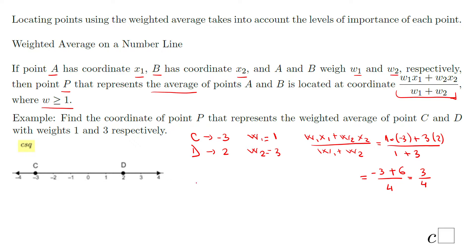That's the coordinate of point P. Point P is at 3 over 4, somewhere right here. Which makes sense, because if you take a look, the weight of point D is larger — it's 3 — than the weight of point C, which is 1. So this point P should be closer to point D. That is a good way to check it.